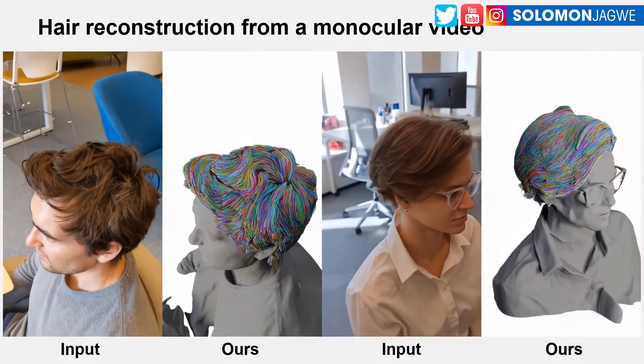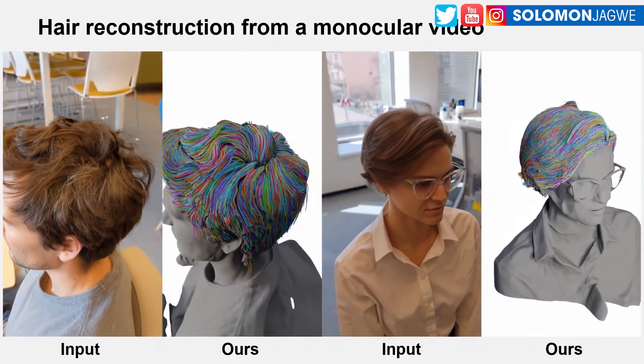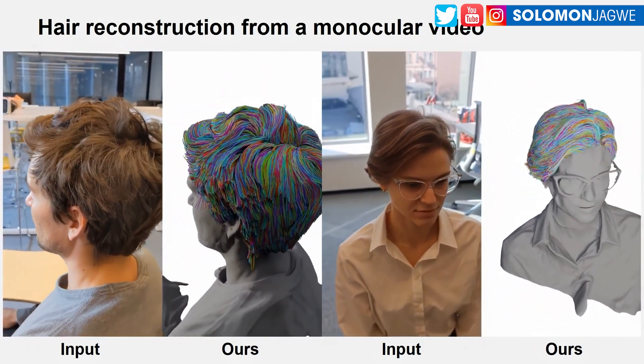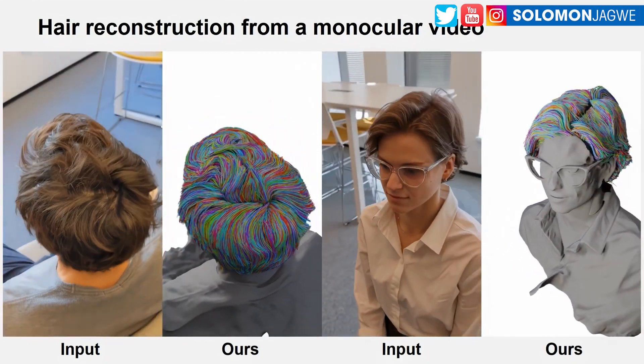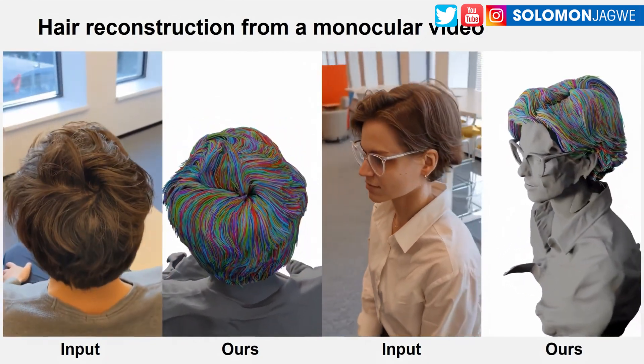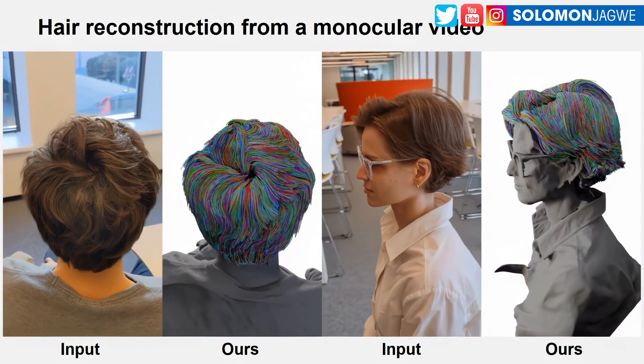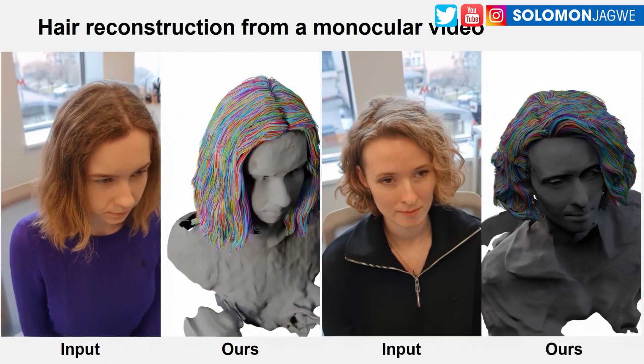What you're looking at is a new technology that is actually using video to render strand-based hair from a character, from a person. This is amazing because for the longest time when we do 3D scans of people, the geometry has to be reconstructed and you have to retopologize the mesh. But what this team of Vanessa, Genia, Andrea, and Ego have done — it's called the Neural Haircut.